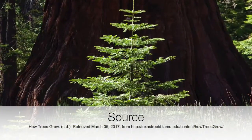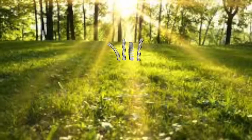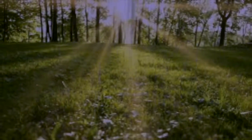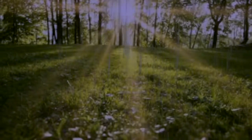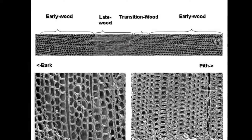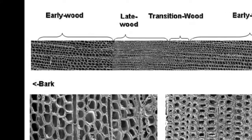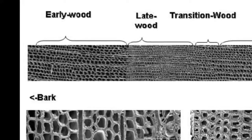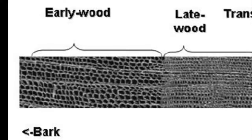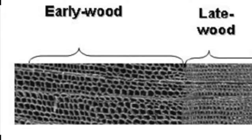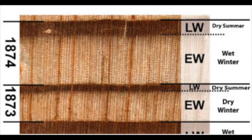As trees grow, they go through two growth cycles per year. During the spring and early summer, the tree does most of its growing due to the wetter conditions. During this cycle, the tree grows large cells with thin cell walls, producing lighter colored wood known as the early wood. In the late summer and fall, the tree produces wood at a slower rate, and the cells are smaller with thicker cell walls, creating darker colored wood known as the late wood. The cycle repeats every year, and the thickness of both the light and dark rings indicates how favorable the climatic conditions of that year were to the tree's growth.